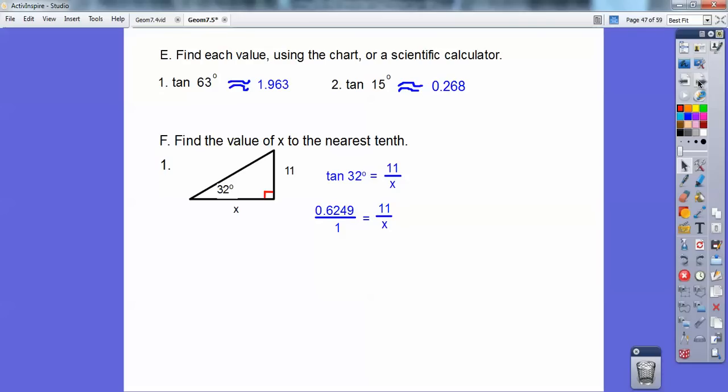Because when I have a fraction equals a fraction, that's called a proportion. And we can do that cross multiplying. So here we go, 0.6249 times x equals 1 times 11. And then you're going to divide both sides by 0.6249. And 11 divided by 0.6249, I get about 17.6. So it's round to the nearest tenth, so tenth is one decimal, so 17.6.